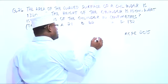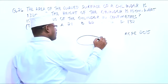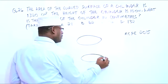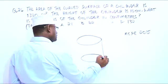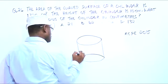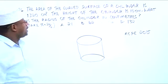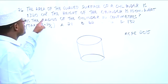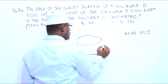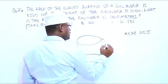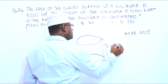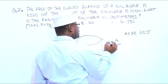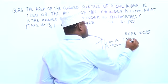Now we have our cylinder. We have the area of the curved surface and the height. Our height is 10 cm, and the area of the curved surface is 1320 cm².